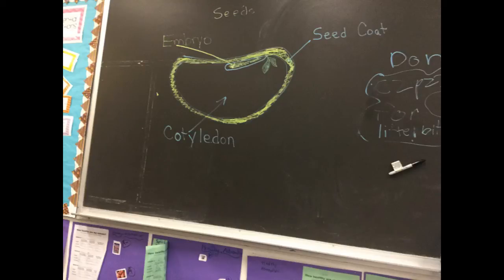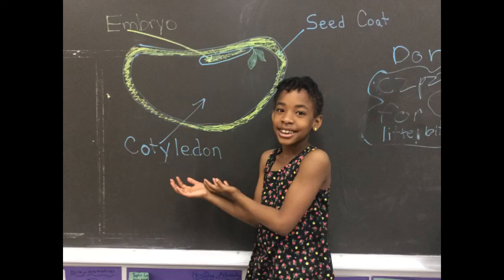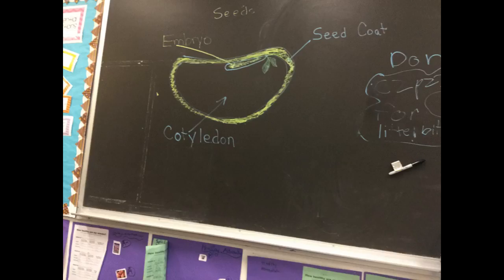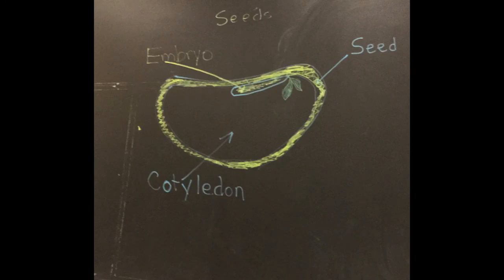The embryo. The last part of the seed is the embryo. The embryo is the thing that turns into a flower. That's the end. That's the parts of the seed. Thank you.